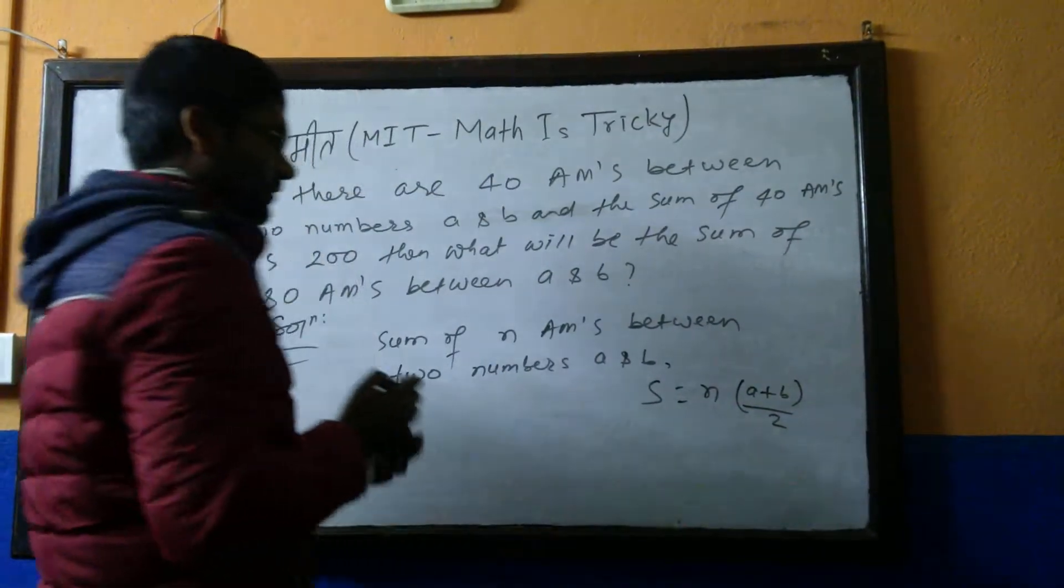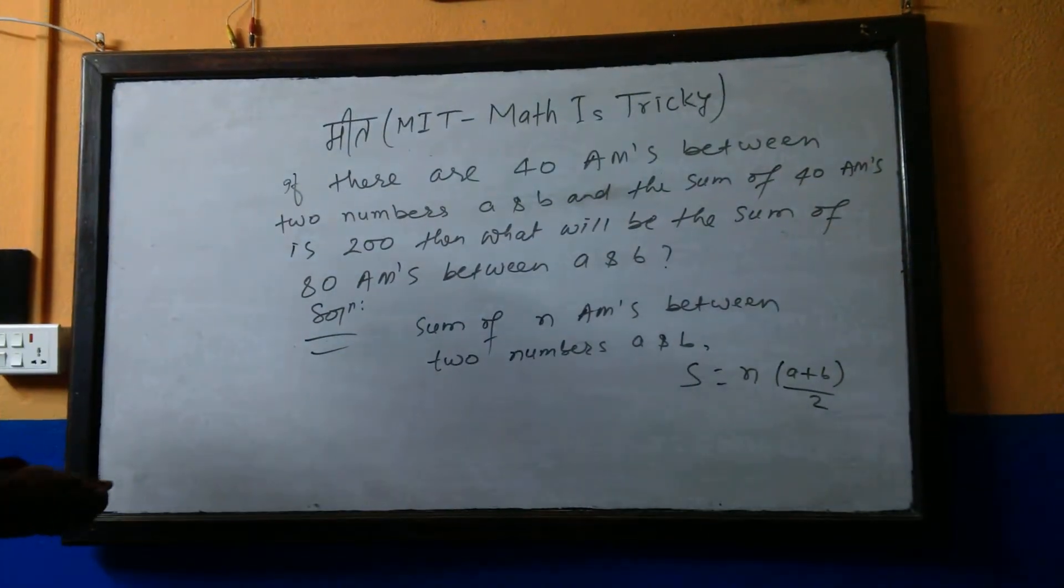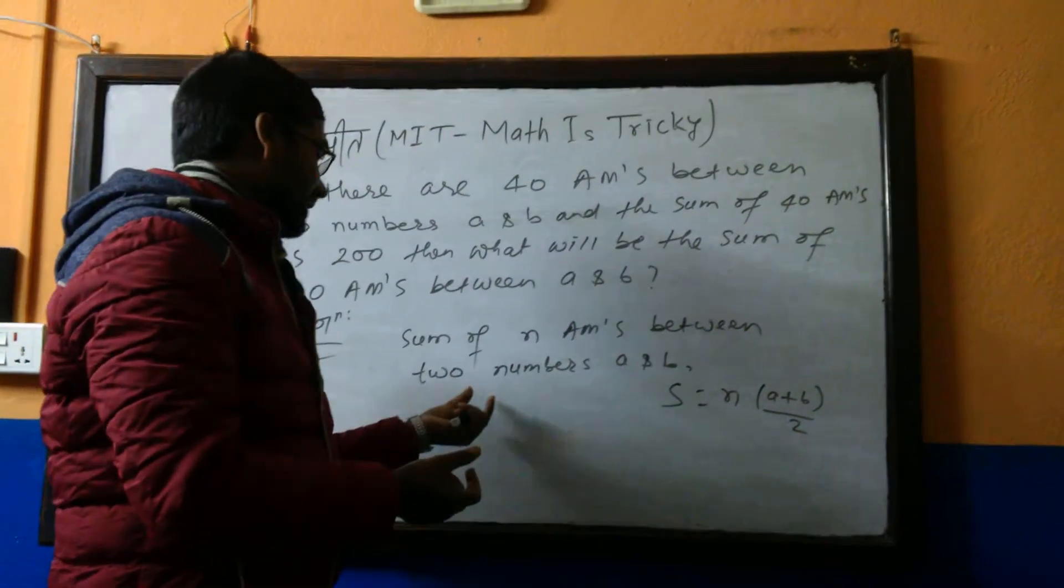Between two numbers A and B is actually given: S equals n times (a + b) by 2. This is the formula. S will be n times (a + b) by 2.